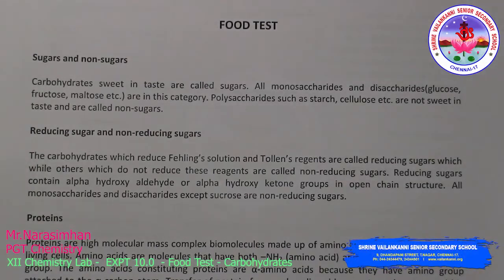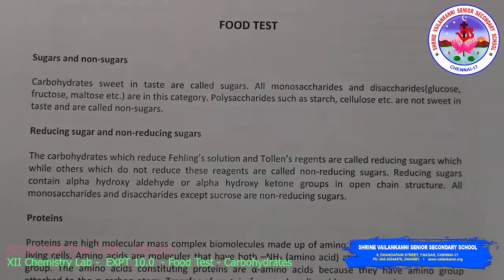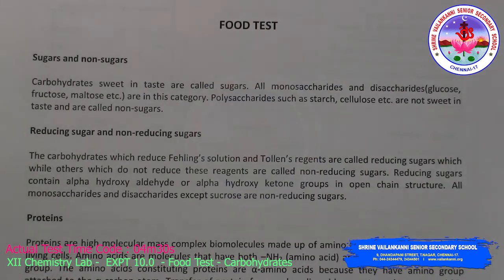Food test: sugars and non-sugars. Carbohydrates usually contain sugars — they are sweet in taste. Examples include all monosaccharides and disaccharides, such as glucose, fructose, and maltose. Non-sugars are polysaccharides such as starch and cellulose; these are called non-sugars and are not sweet in taste.